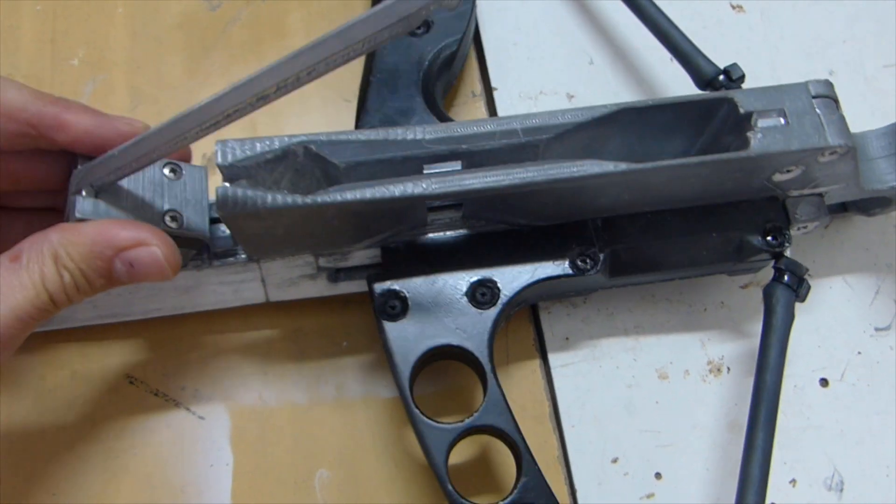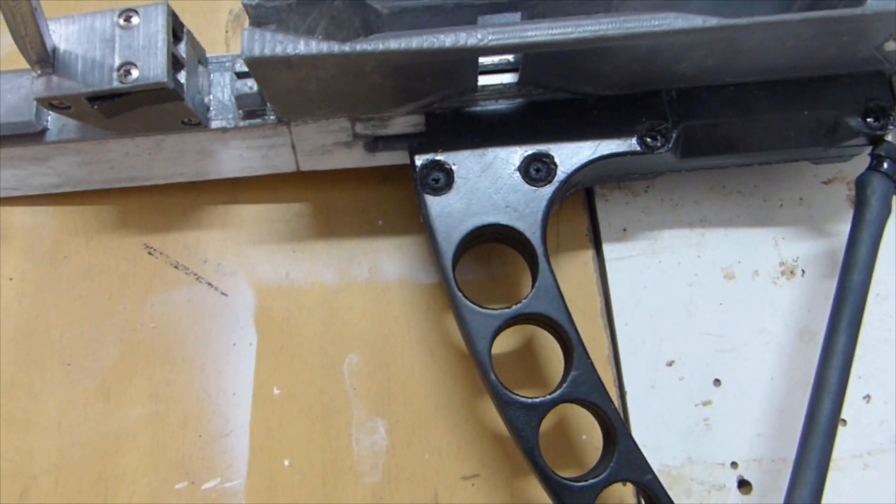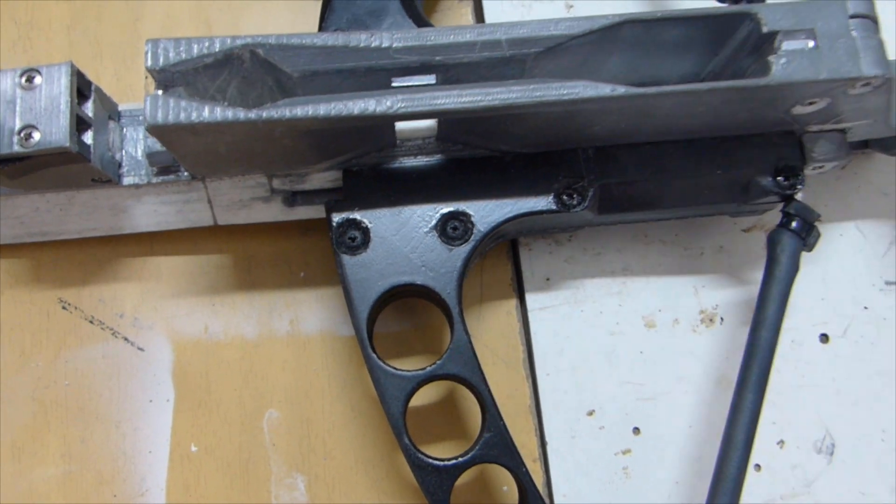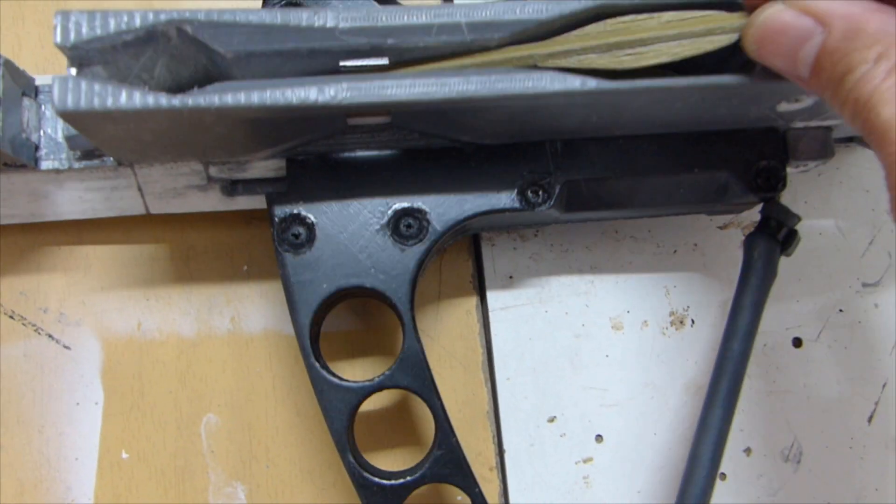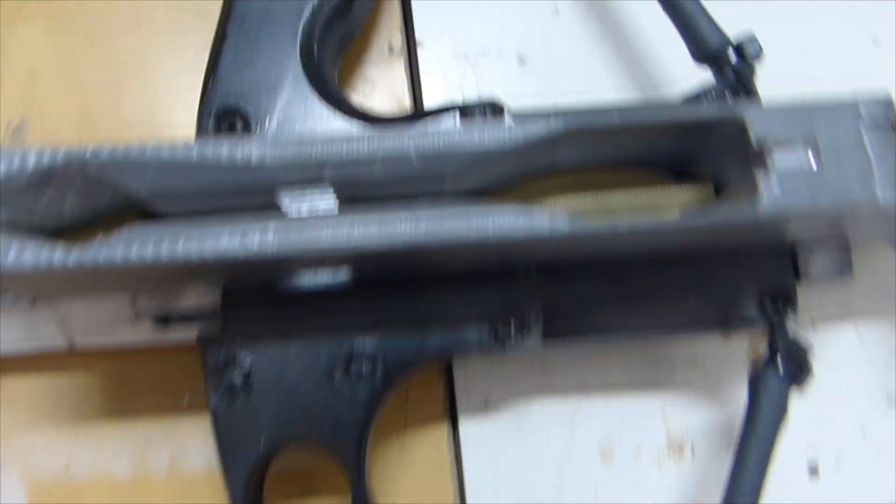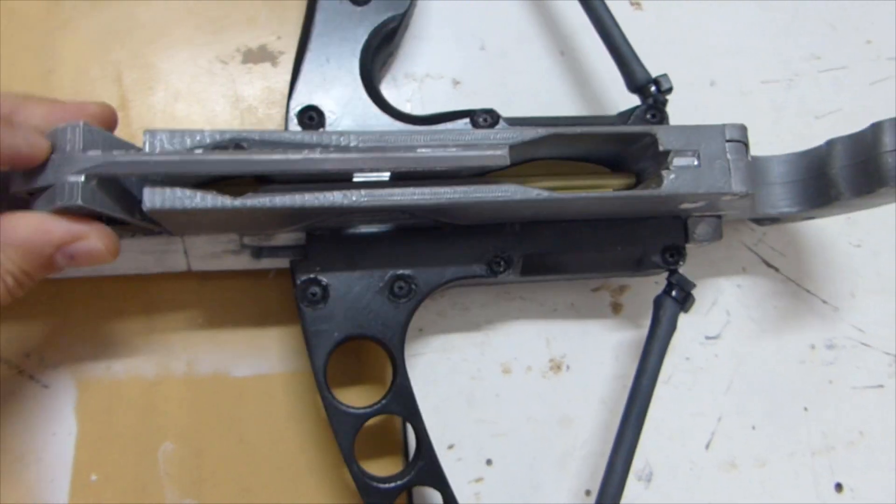Open the loading mechanism by pressing the two black clips and insert the arrows. You can print an optional magazine included with the STL files to load 6 arrows all at once faster, but this way is also fine. Close the loading mechanism again and make sure it is secure.